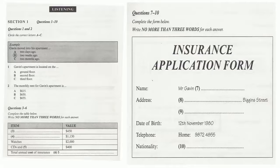Section 1. Gavin, a newly arrived student, wants to insure the contents of his apartment. He calls an insurance agent to ask for information. First, you have some time to look at questions 1 to 6. You will see that there is an example that has been done for you. On this occasion only, the conversation relating to this will be played first.